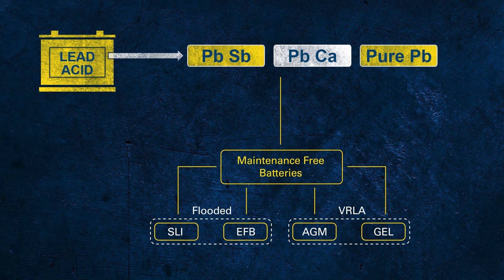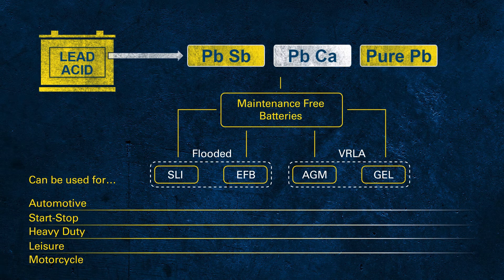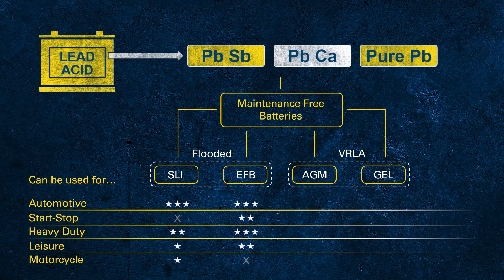As the battery technologies are different, not every technology can properly support all applications. The SLI battery is great for conventional vehicles but can't be used in modern vehicles with start-stop functionality. In the EU, more than 90% of all newly manufactured vehicles come with start-stop systems to meet CO2 regulations. The EFB battery is an enhanced battery that can support basic start-stop systems, but it reaches its limits in more aggressive start-stop systems or cars with many electrical consumers.